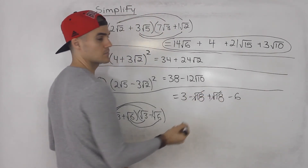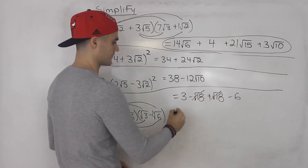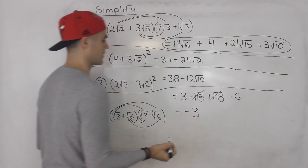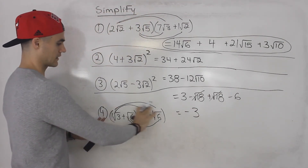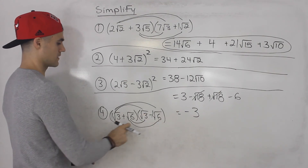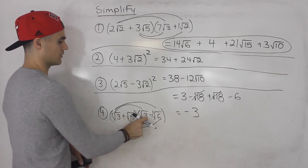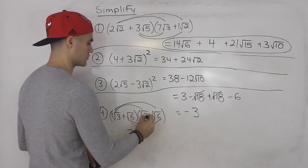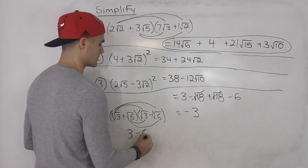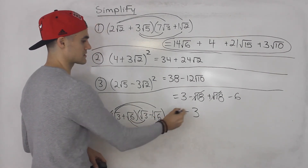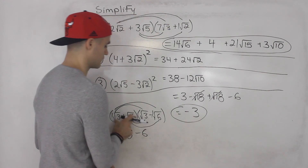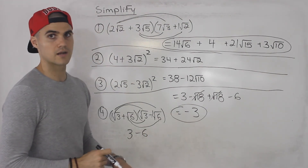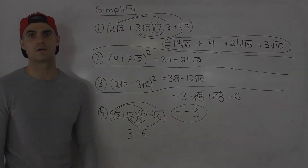As mentioned, the middle terms cancel out — negative √18 and positive √18 cancel. So 3 minus 6 gives us negative 3. If you recognize the difference of squares pattern, you can just multiply the end terms directly: √3 times √3 is 3, and √6 times negative √6 gives minus 6, so 3 minus 6 equals negative 3. You can verify this by plugging it into your calculator.